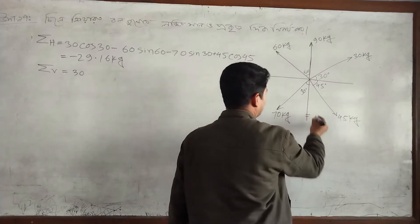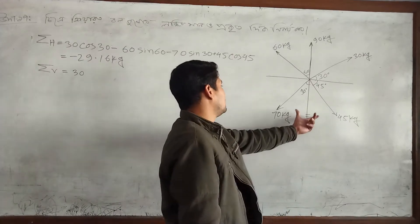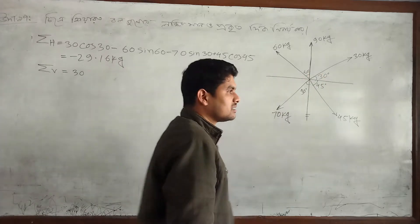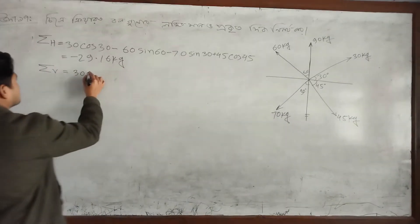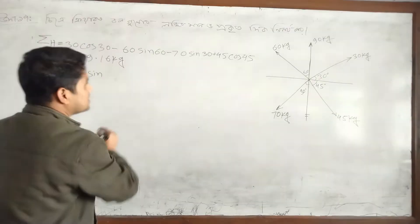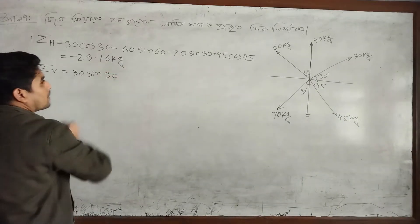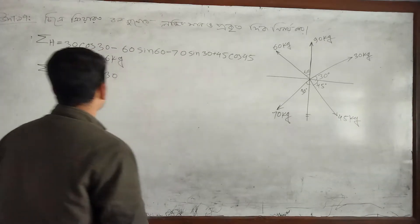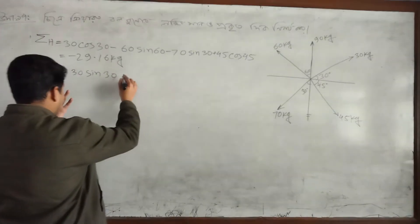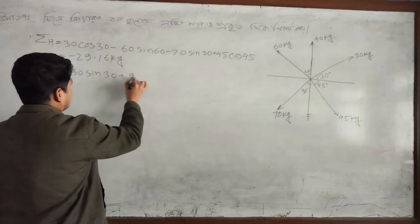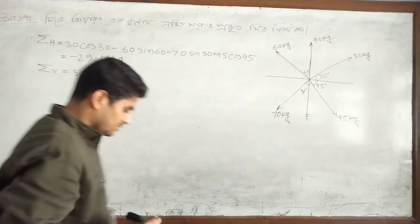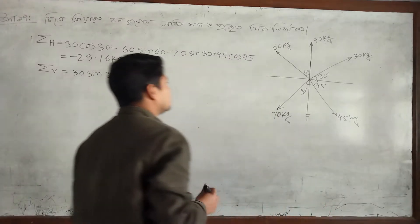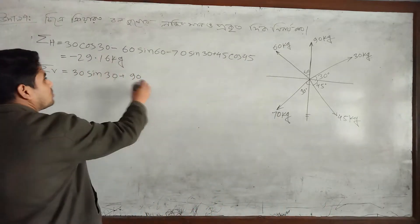The 30 kg force — its vertical component. The angle with vertical is not given — sine of the degree. Tartara 90: the force is straight, so the angle is 90 degrees. It is a straight force, so cos of the narrow angle — plus 90.